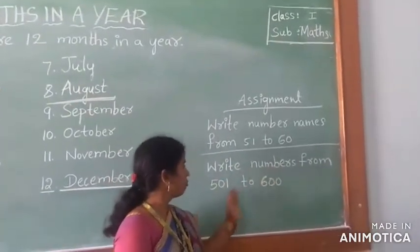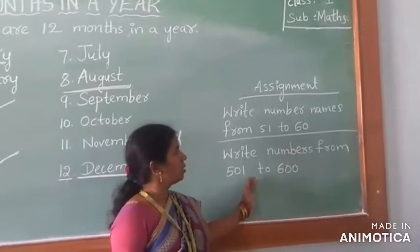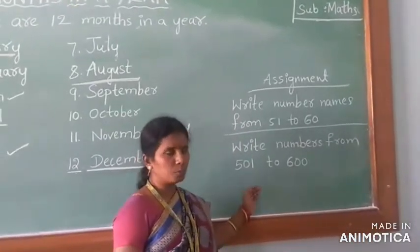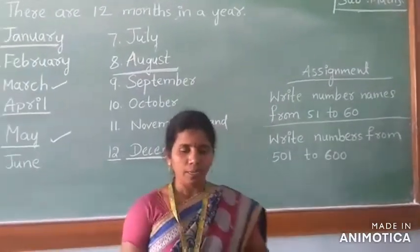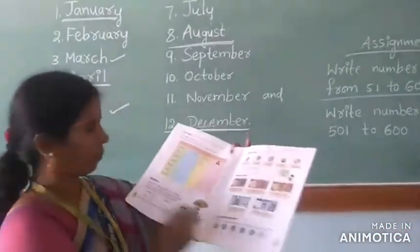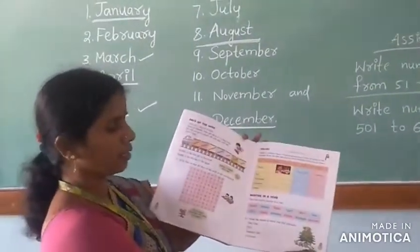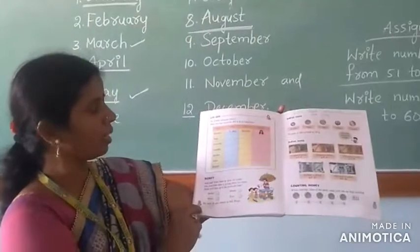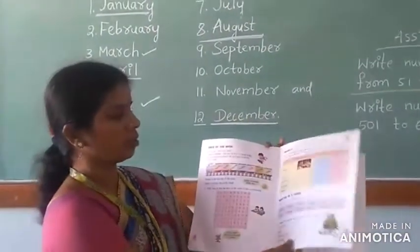And write numbers from 501 to 600. These are number names — high numbers. Write in your rough book. And textbook homework also. Page number 133 and 134. Complete these two pages in your textbook.